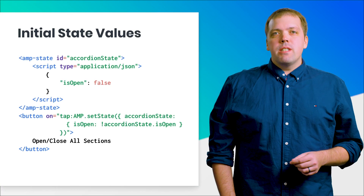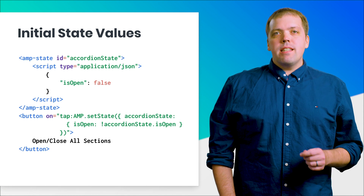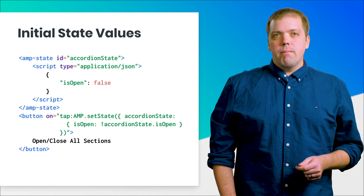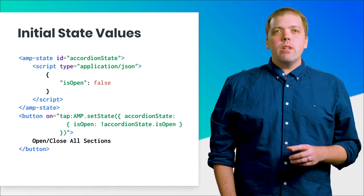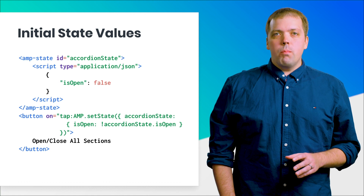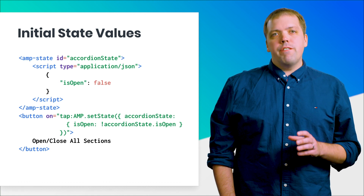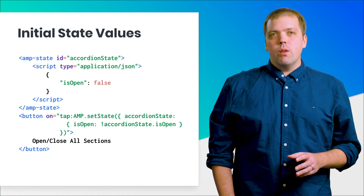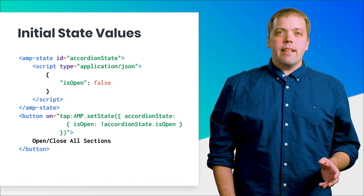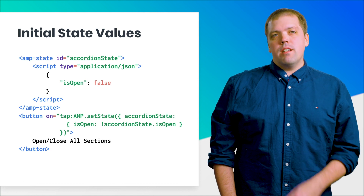Here's an example of setting initial state using the AMP state component. This creates the state variable accordionState.isOpen with a default value of false. When the button is clicked, the value of isOpen is toggled.